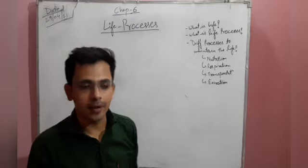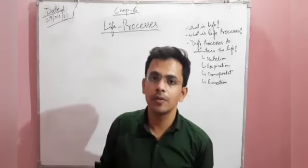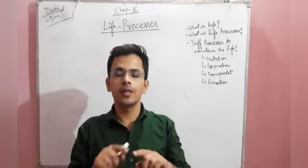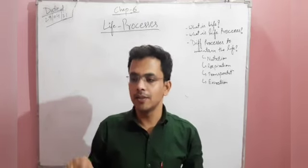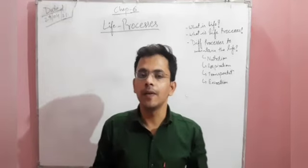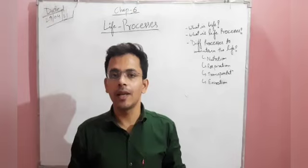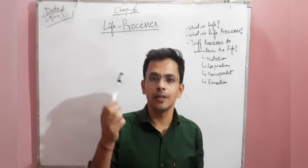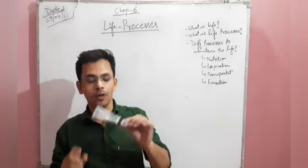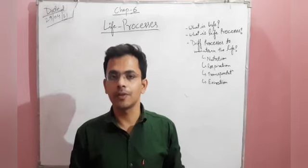How can you differentiate between life and non-life? There are some measures on the basis of which we can say something is living or non-living. The first measure is reproduction — if an organism can reproduce, it is living. For example, a marker cannot reproduce, so it is a non-living thing.